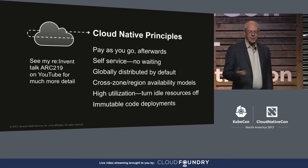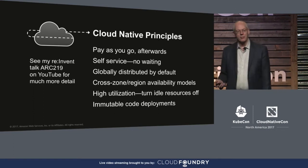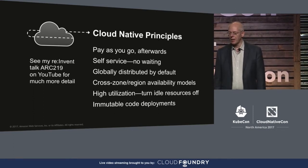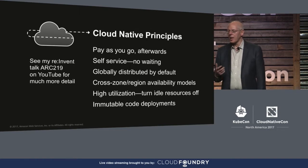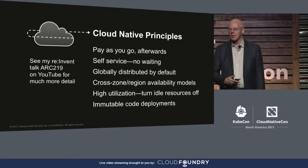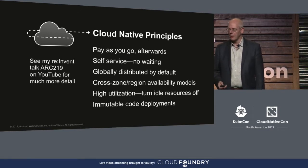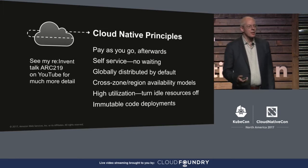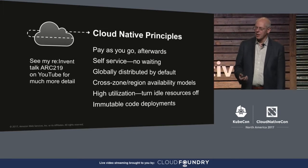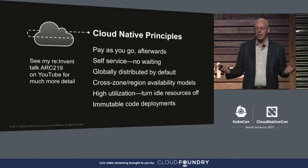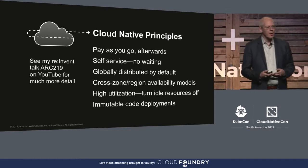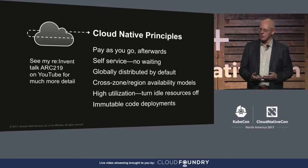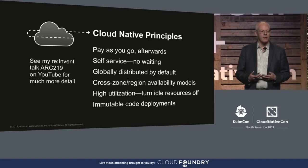So cloud native principles — there's a whole long presentation on this, and the hour-long version is up from re:Invent last week. You can Google 'ARC 219' to find it. These are the principles that I think make something cloud native: it's pay-as-you-go and you're paying after the event, not having to invest in a data center and guess how much capacity you'll need next year. It's self-service, no waiting, everything is API-deployed and provisioned. Globally distributed by default — the cloud is out there and you can use things around the world without being constrained to where you happen to have built a data center. The availability models take into account zones and regions.